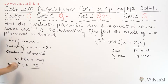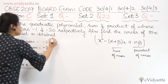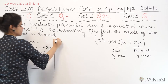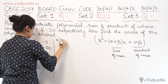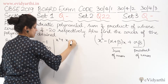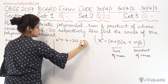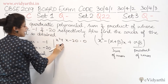So this is our quadratic polynomial which we find. But in the question, we also need to find the zeros of the polynomial. So this is the polynomial we found: x squared plus x minus 20 equals to 0.